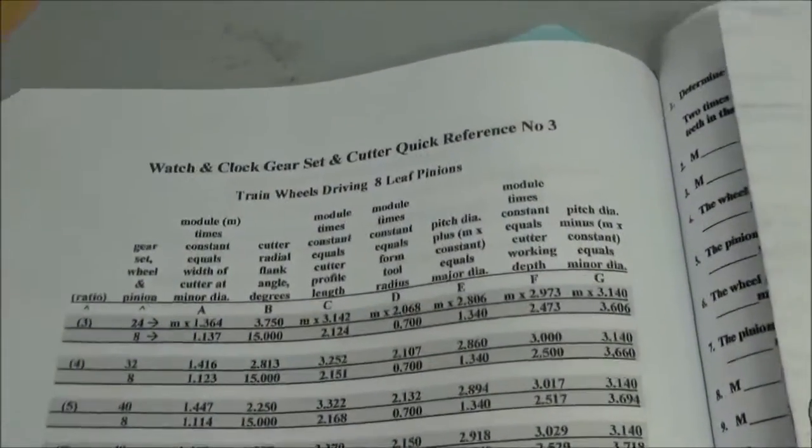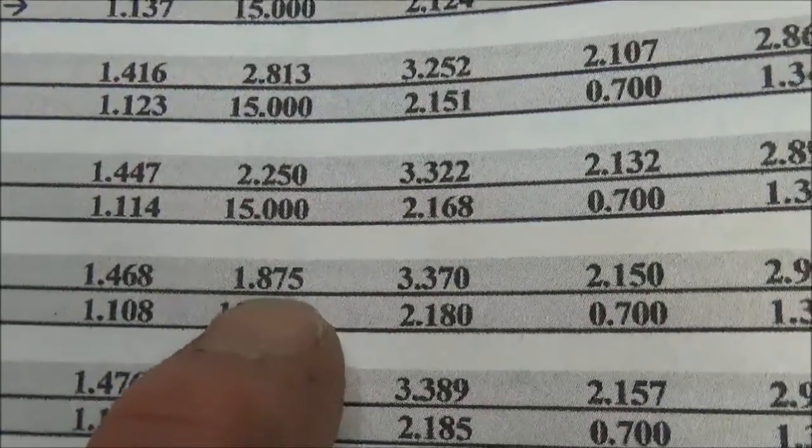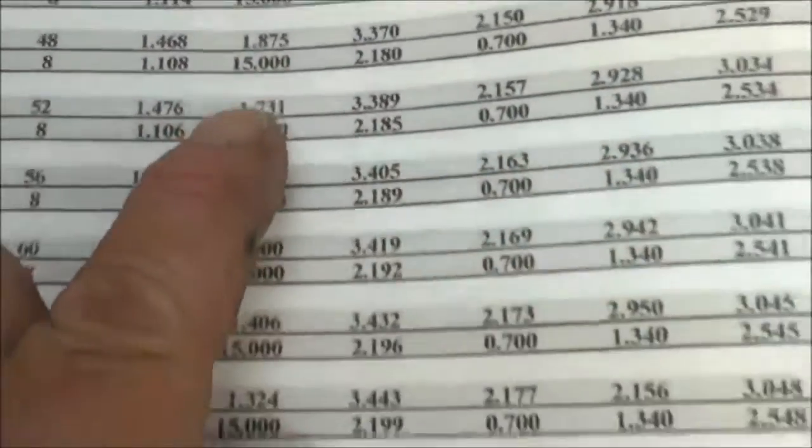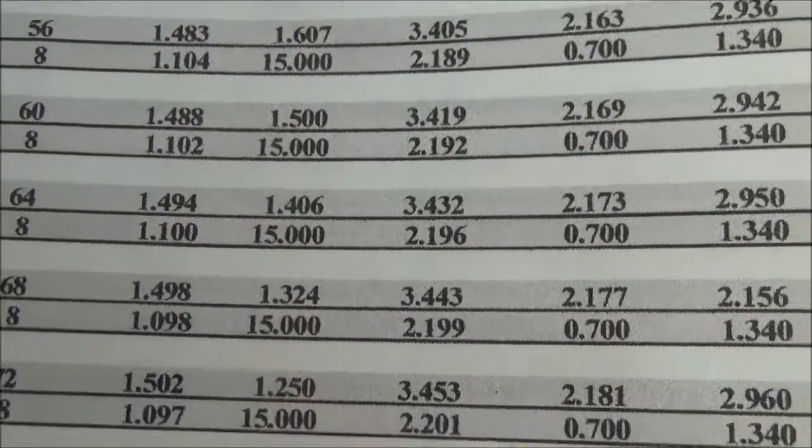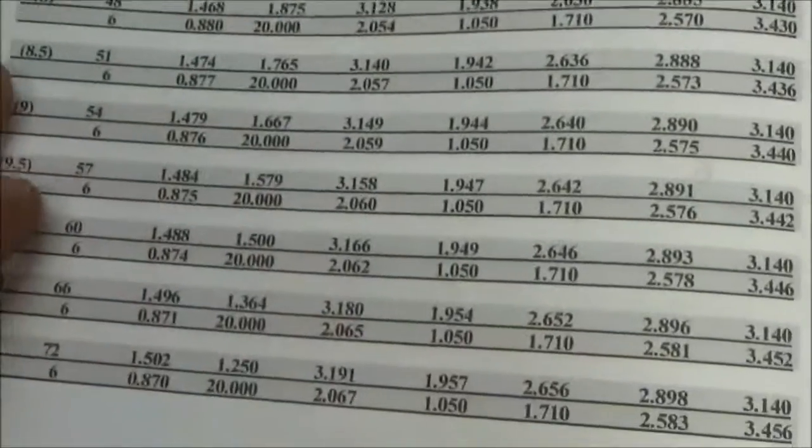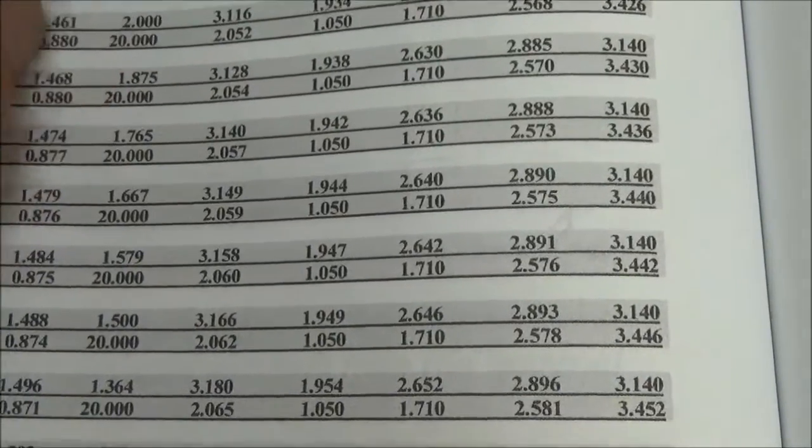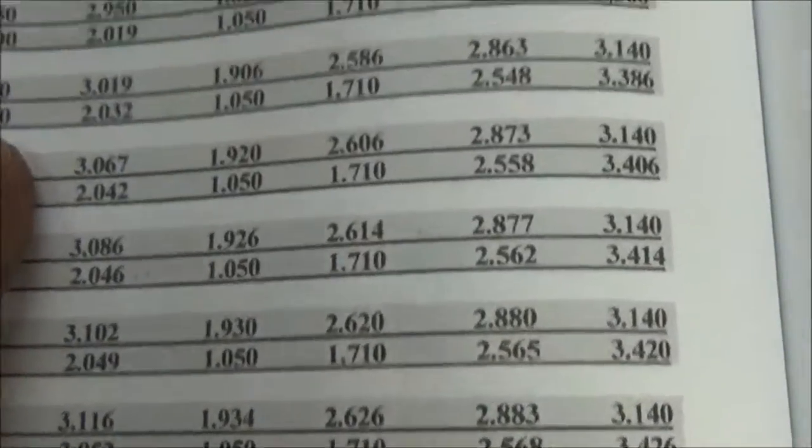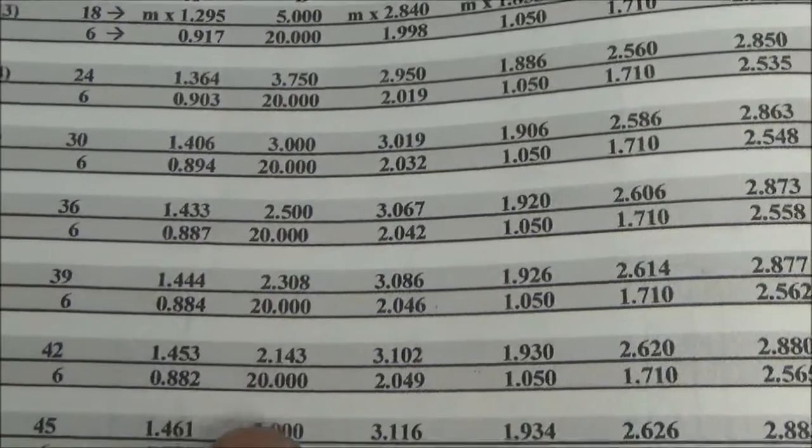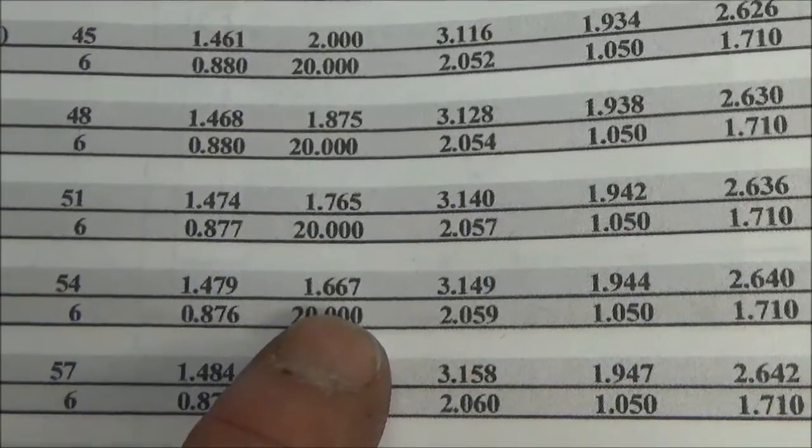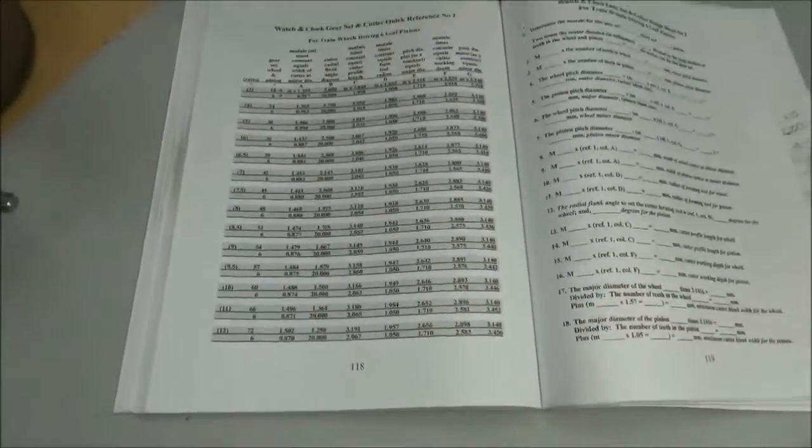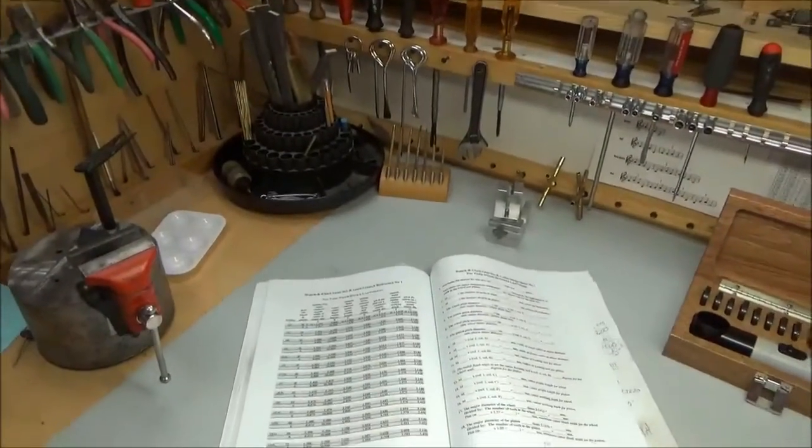But if I had, say I had 13, or let's say I had 1.875 degrees. Or 1.324 degrees. There's all different kinds. Cutter radial flank angle in degrees. Well, we have 20. That's a pretty common number. That'd be easy to find. But if you had to find 2.143, for instance, 1.667. Okay, so you get the idea that there are a lot of different radial flank angles.